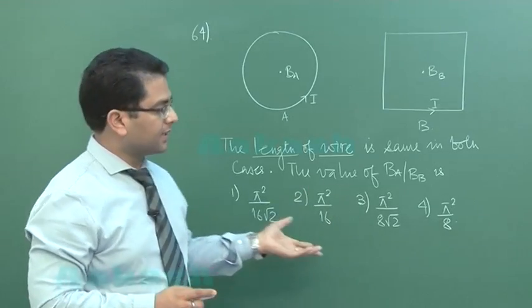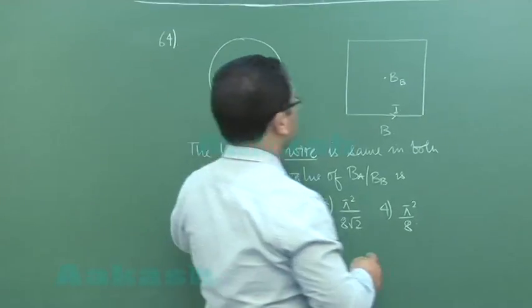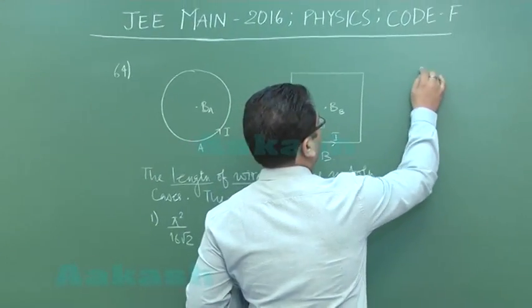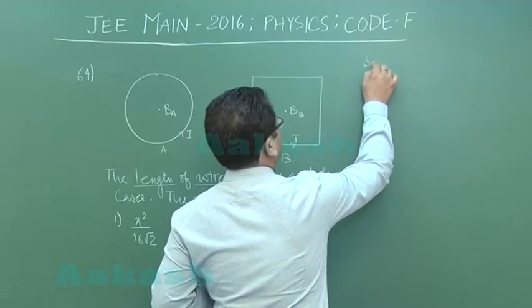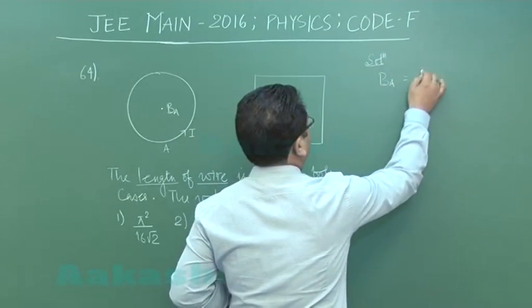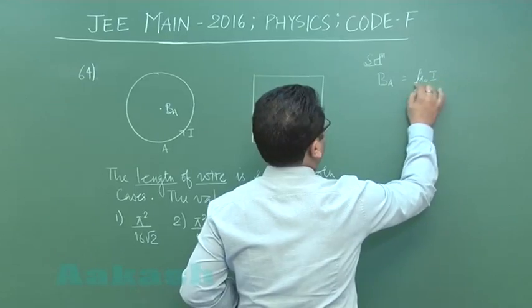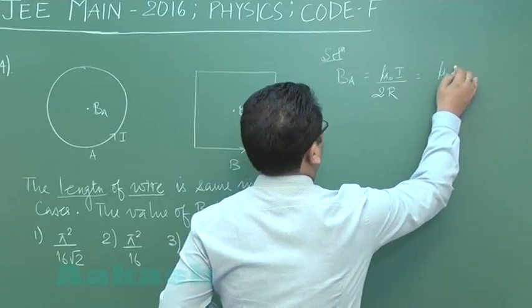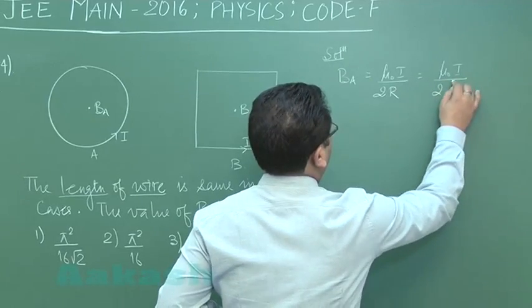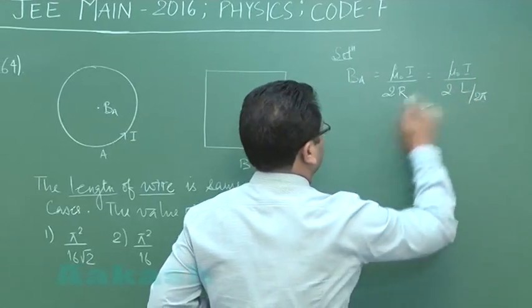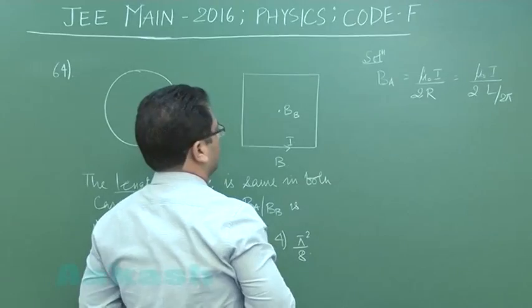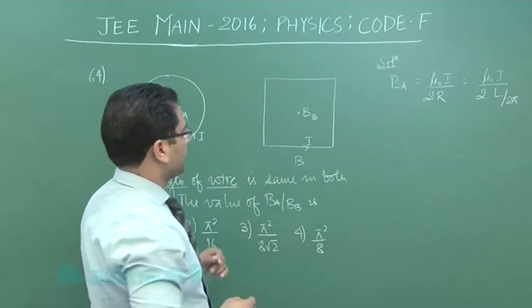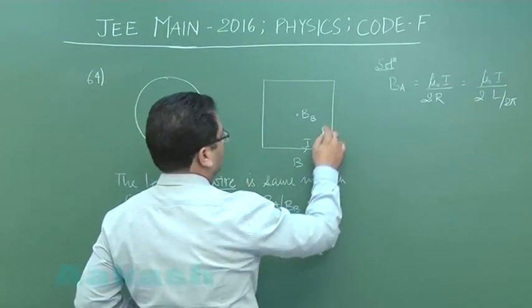Now the value of Ba by Bb. As I said, a direct formula based question. First for Ba, the magnetic field at the center would be mu naught I by 2r, and of course r would be L by 2 pi because L is 2 pi r.